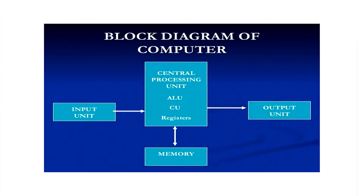The input unit accepts data from the user. Data can be accepted in many forms: text, audio, pictures, and more. Various input devices help us accept data, and we will cover these during the session. The central processing unit converts the accepted data into the output we want — it is basically the processing unit which converts input to output.